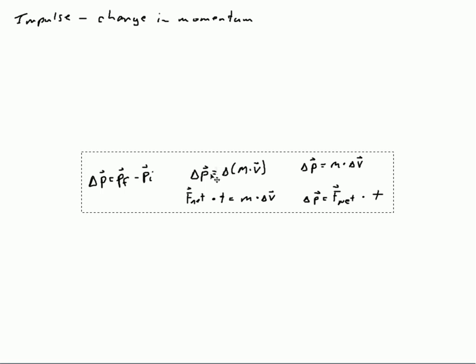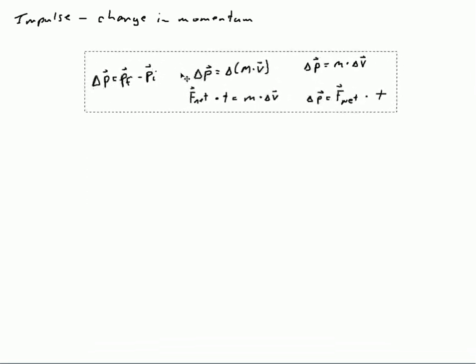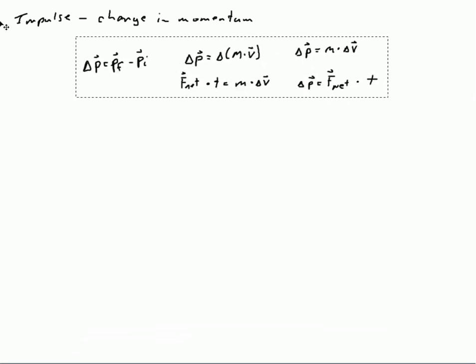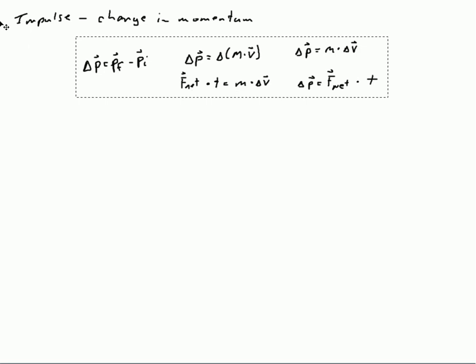From the previous video, we came up with some equations for impulse. So these are the various equations that we came up with. We're looking at the various equations here. Delta p, that's your impulse, and it's simply the final momentum minus the initial momentum.